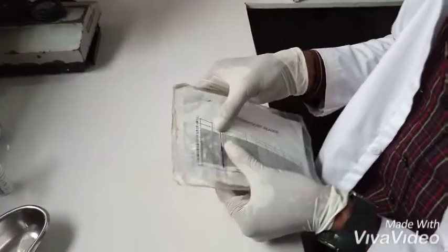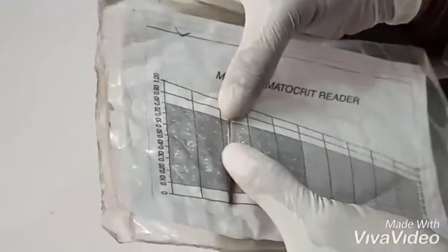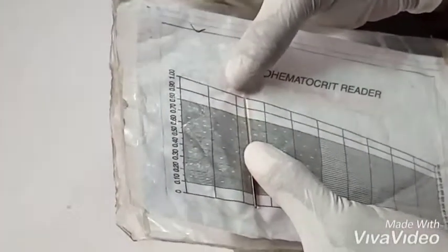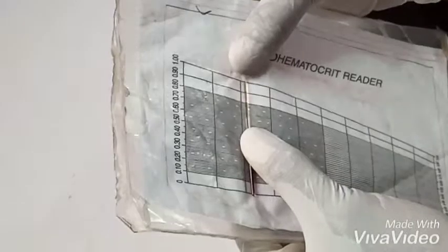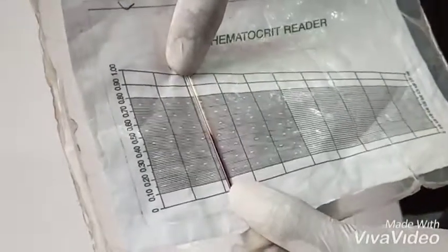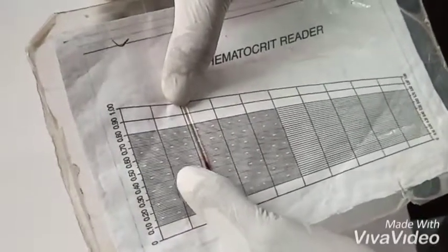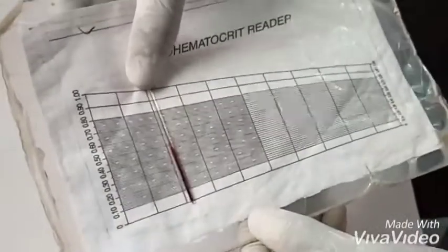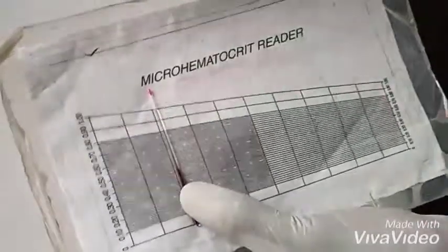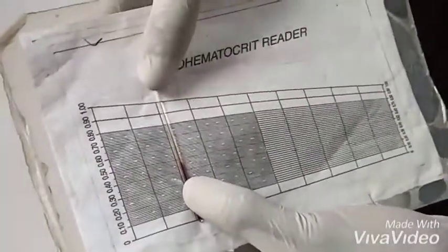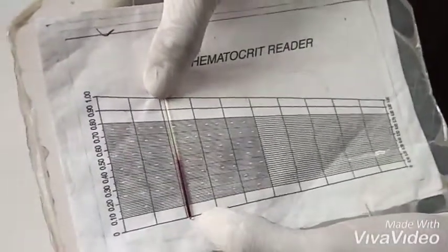Using a microhematocrit reader, make sure that both ends of the blood serum is placed at either end of the calibrated points. From my reading here, we see that the packed cell volume is 45%. Males have a normal range of 40 to 56%, females from 36 to 46%.